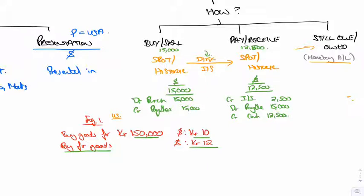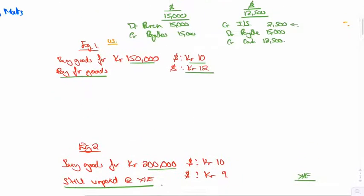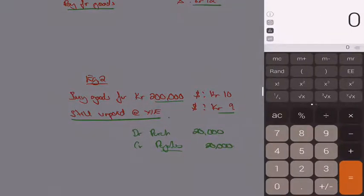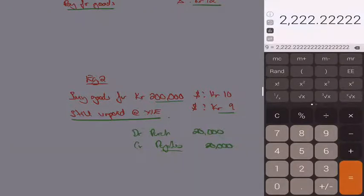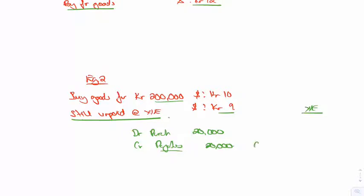Now let's do another example. In this example, same thing but it's 200,000. So I will debit purchases, I will credit my payables with 200,000 divided by 10 - 20,000. But this time it's unpaid at the year end. So what I do at the year end - I re-translate any monetary assets and liabilities. What's my monetary liability? It's the payable. So monetary liability with foreign loan, foreign debtor, foreign creditor or whatever. So I need to re-translate that 20,000, this time at the rate of nine. So 200,000 divided by nine - my payable should be 22,222.